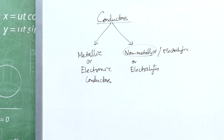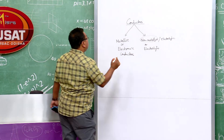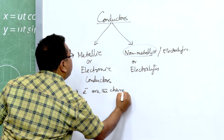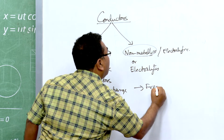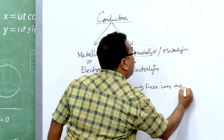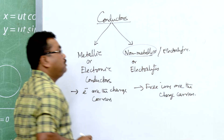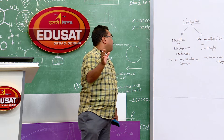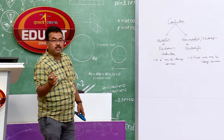The key difference between metallic and electrolytic conductors is that in metallic conductors, electrons are the charge carriers — specifically, free electrons. In electrolytic conductors, free ions are the charge carriers.